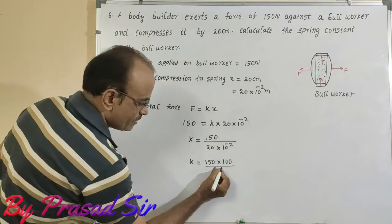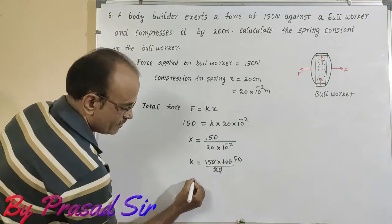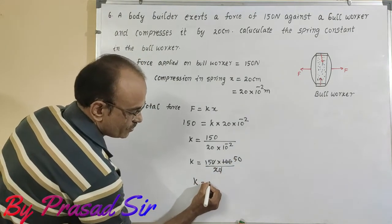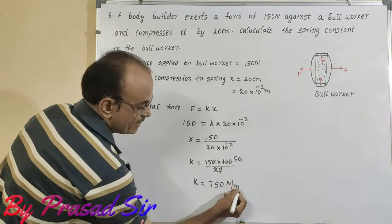Here 0, 0 cancel 2, here 50. k is equal to 750 newton by meter.